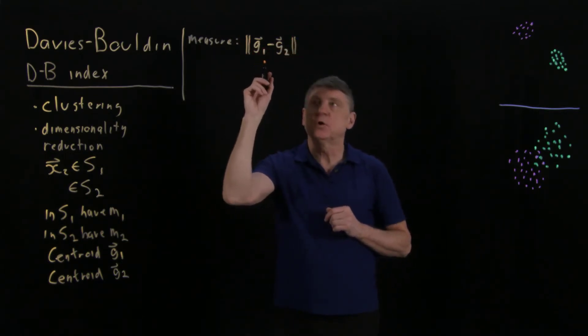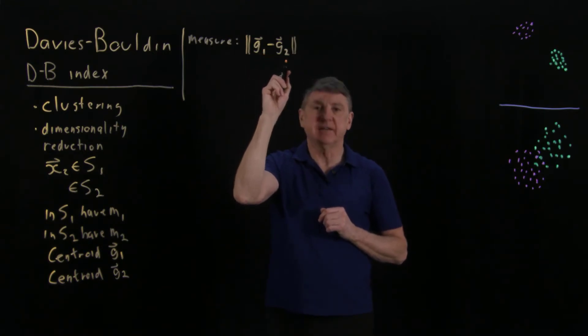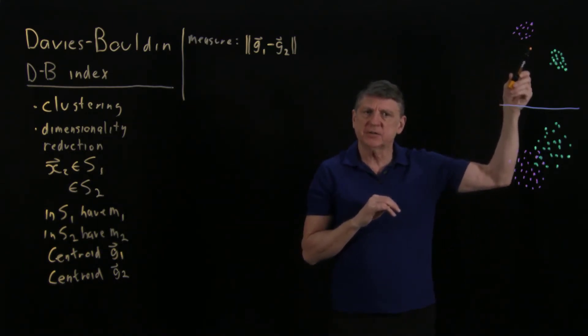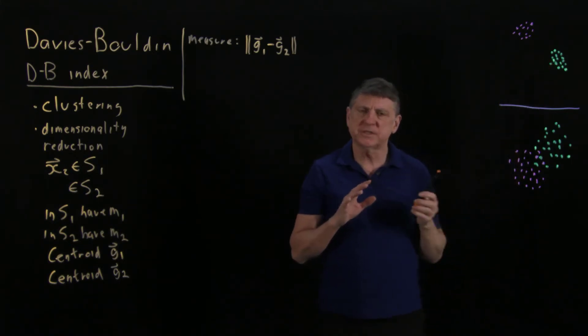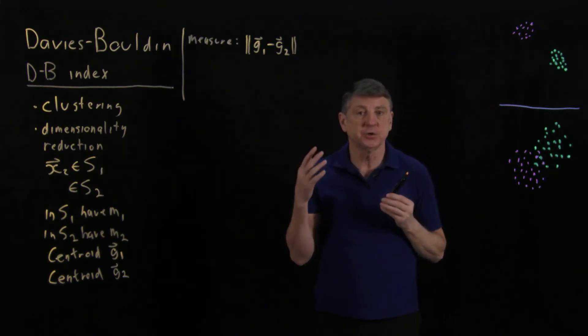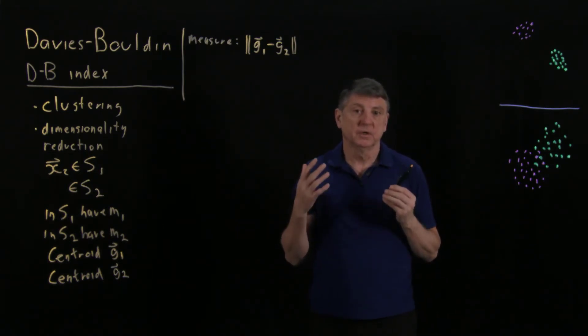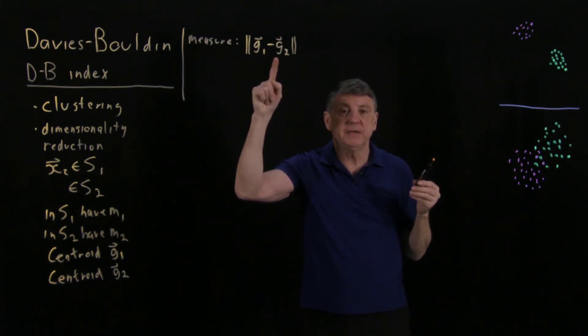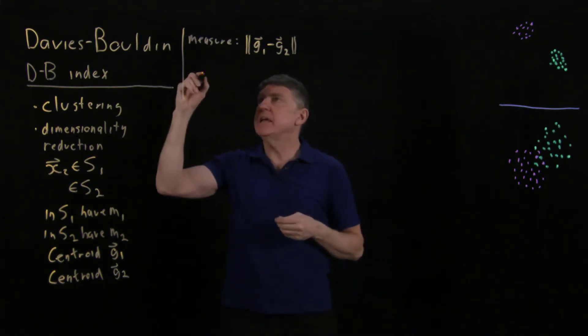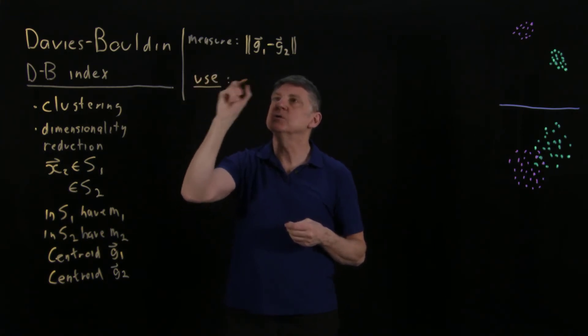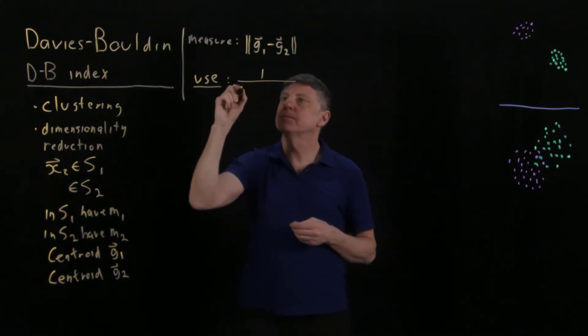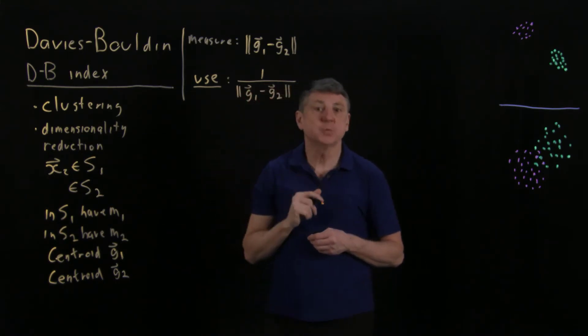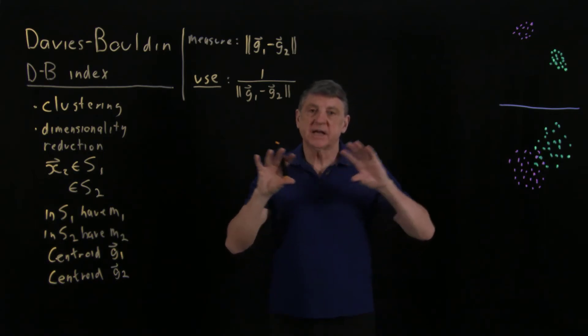So what we could do is we could measure the difference between the centroids G1 minus G2. And that would be a vector. And one of the usual ways for us to evaluate a vector is to take the vector norm. So we could take the norm of that vector. And as these get closer and closer together, imagine here that we bring this cluster and it starts to approach that cluster. We would say that's not good. And so what we would do is say a larger DB index is a poorer separation. So if this cluster was really close to that, then the difference in the norms would be very small. And so instead, what we'll do, we'll use one over the distance between the clusters.